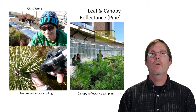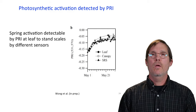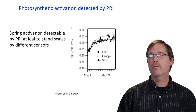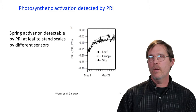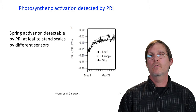From winter to spring we see a clear transition in PRI, whether looking at the leaf scale, canopy scale, or using automated sensors like the SRS sensor. Regardless of scale or method, we see this spring activation — a change in pigment pools correlated with the turning-on of photosynthesis in the spring. In these seasonal studies, PRI is a pretty good indicator of seasonal changes in photosynthetic activity in evergreens.